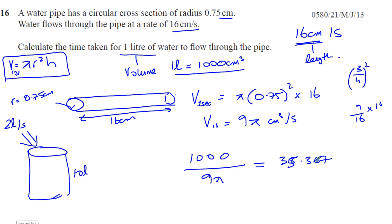Why is it in seconds? Because this was the volume flowing per second - centimeters cubed per second - the answer is going to come out in seconds. It says calculate the time taken. It didn't give you any unit or rounding instruction, so you write to 3 significant figures which is 35.4 seconds, and there is our answer.